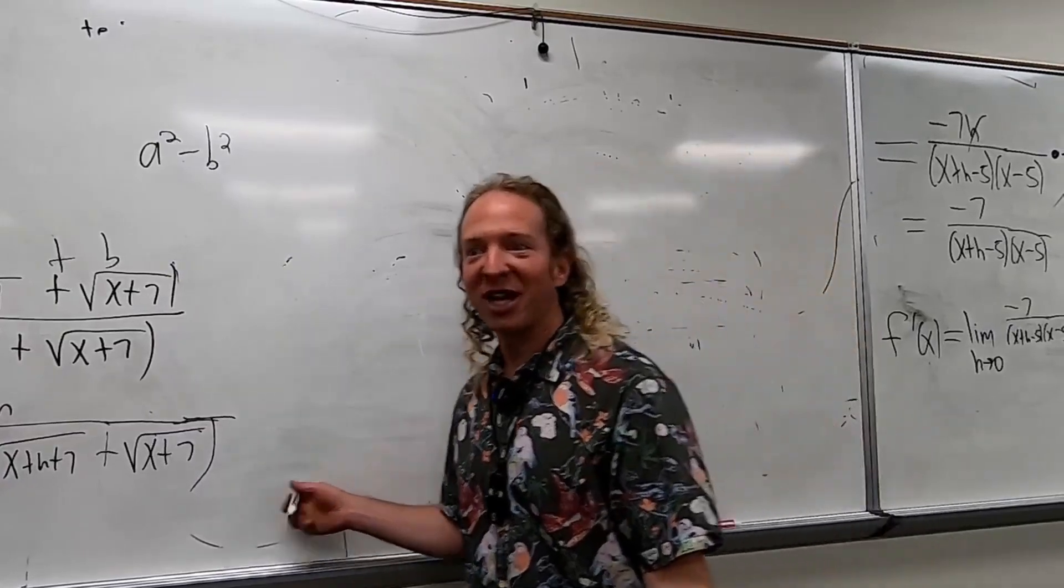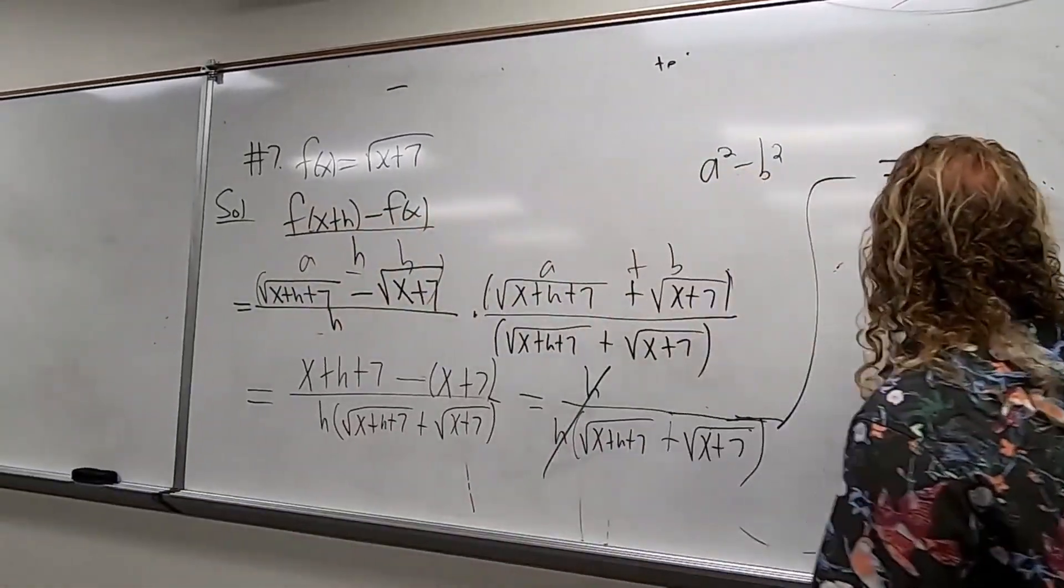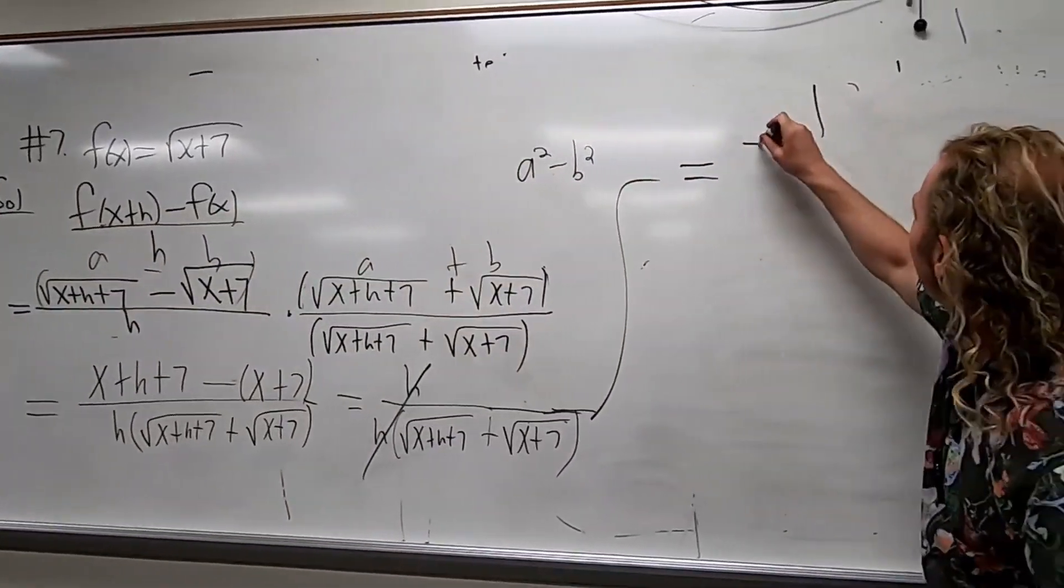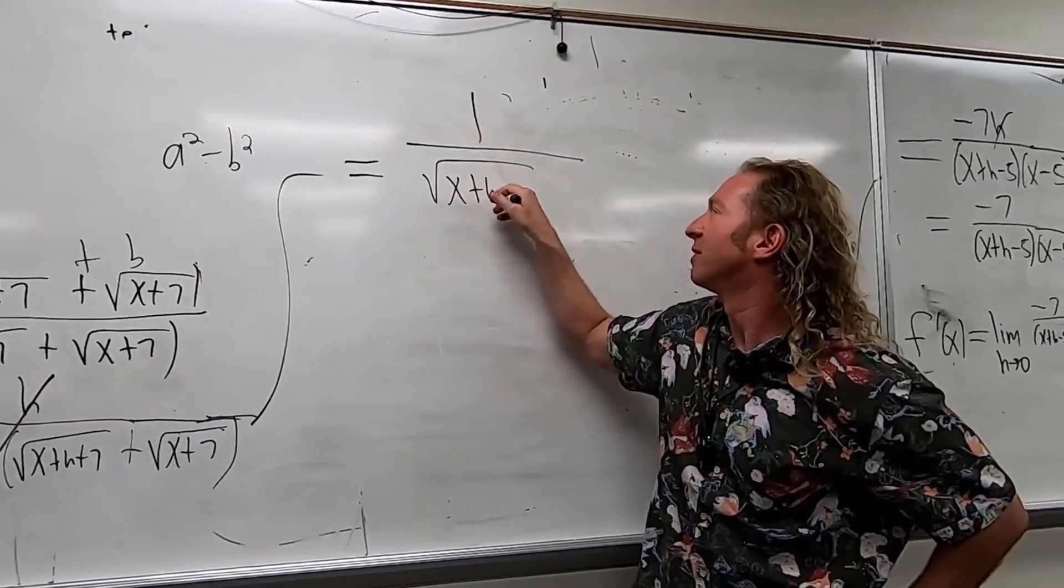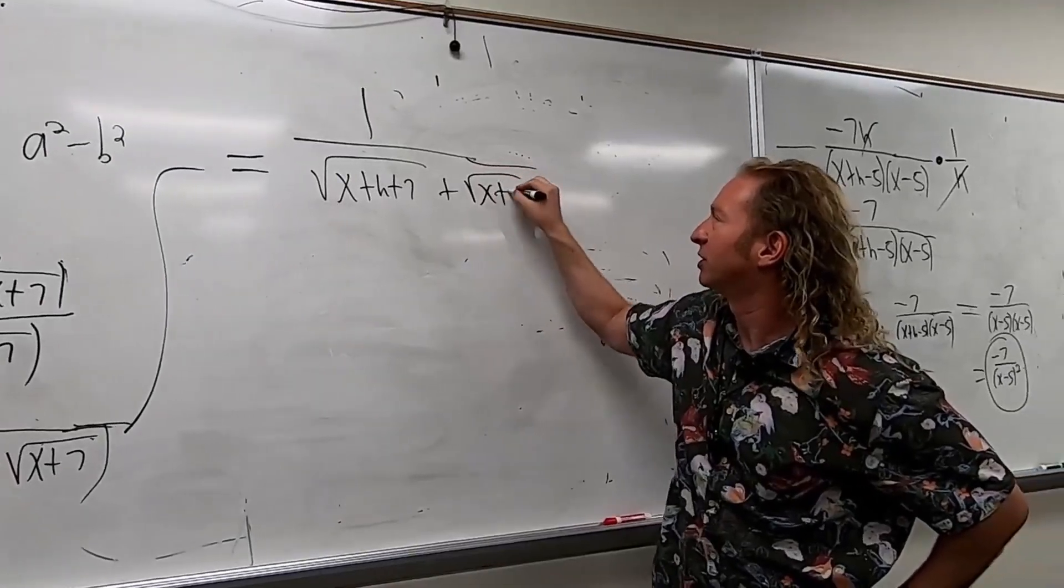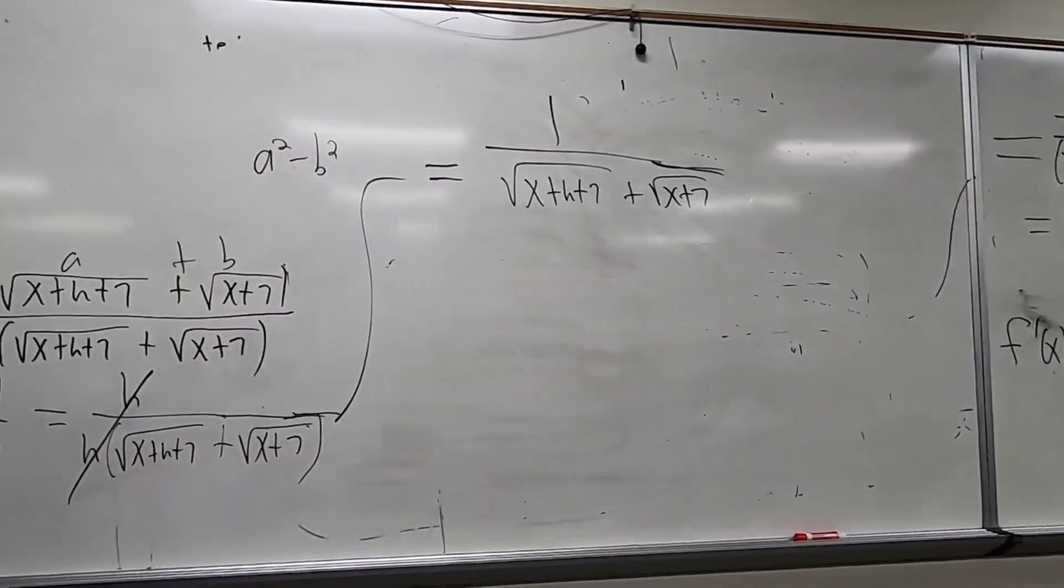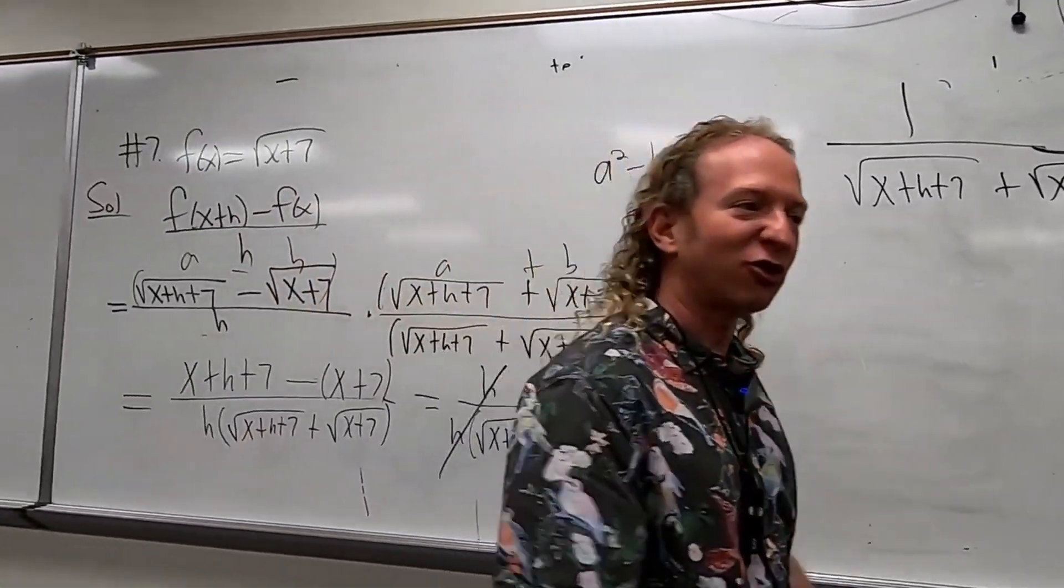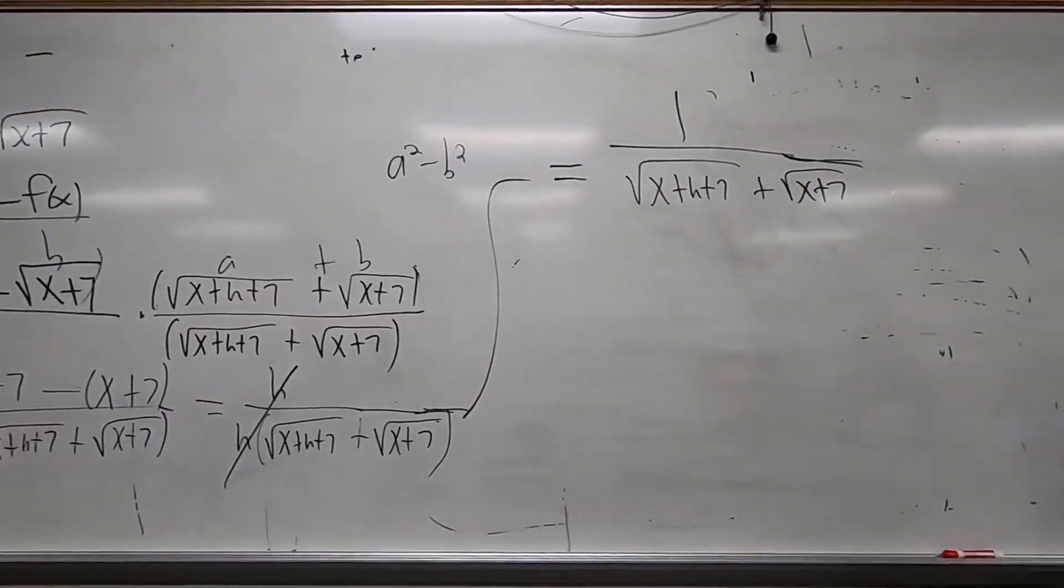What cancels? The h's cancel. So we get 1 over square root of x plus h plus 7 plus square root of x plus 7. We've arrived at this piece here. This is the slope of the secant line, called the difference quotient. It's not the derivative yet.